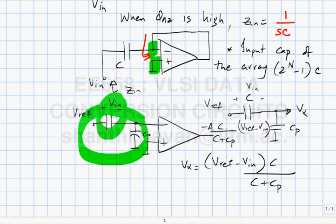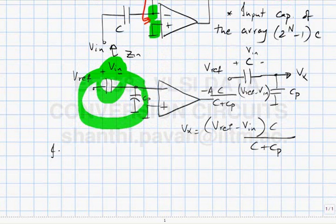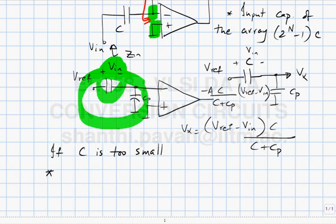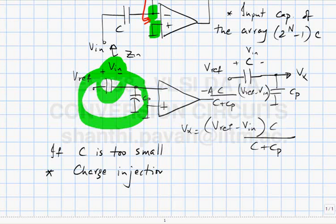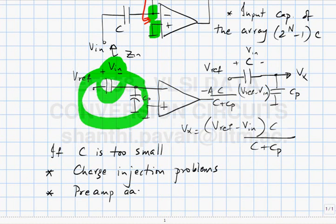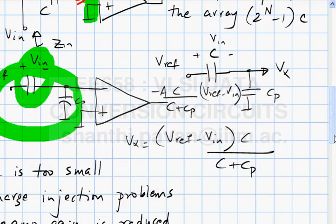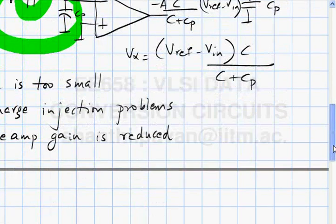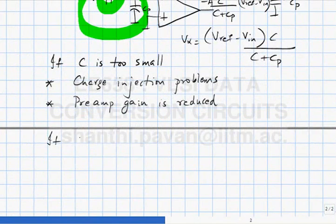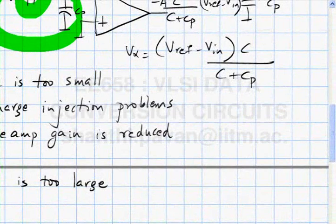So if C is too small, two things happen. One is charge injection. Second one is that the preamp gain is reduced.